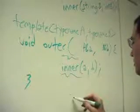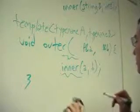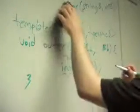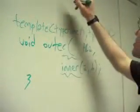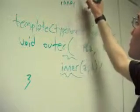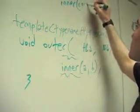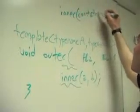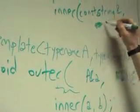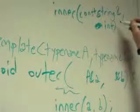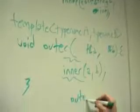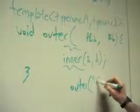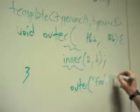Then I try to call outer. Well, now imagine that I have a different inner function that looks like this. Sort of the reverse. String reference, const reference, or just int by value. And now I try to call outer with foo and 1729.